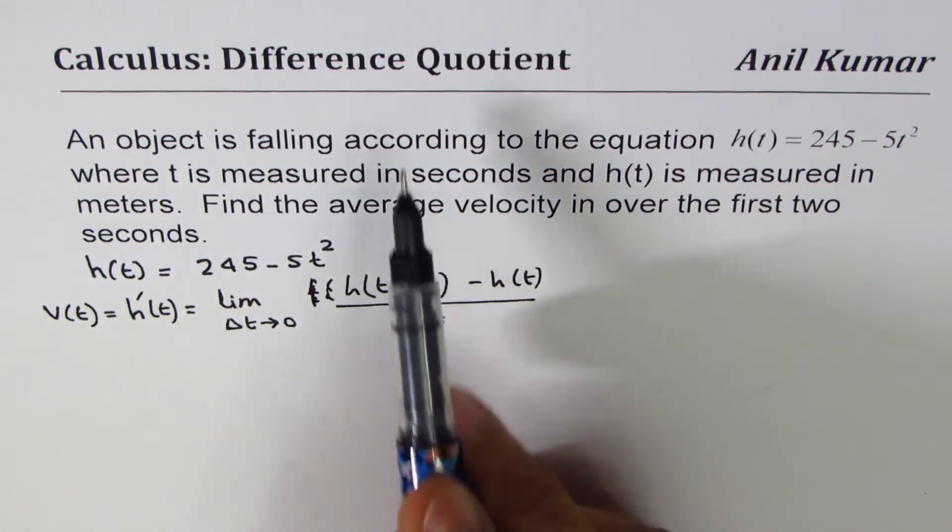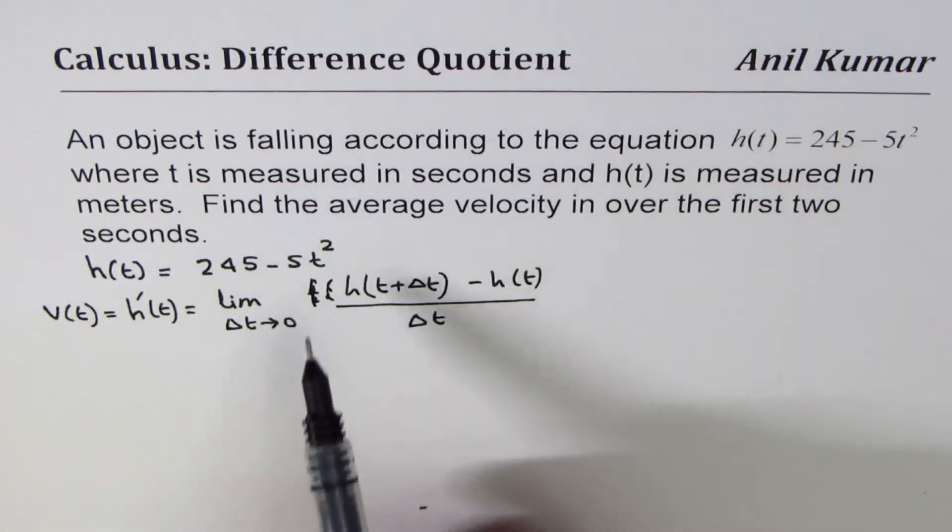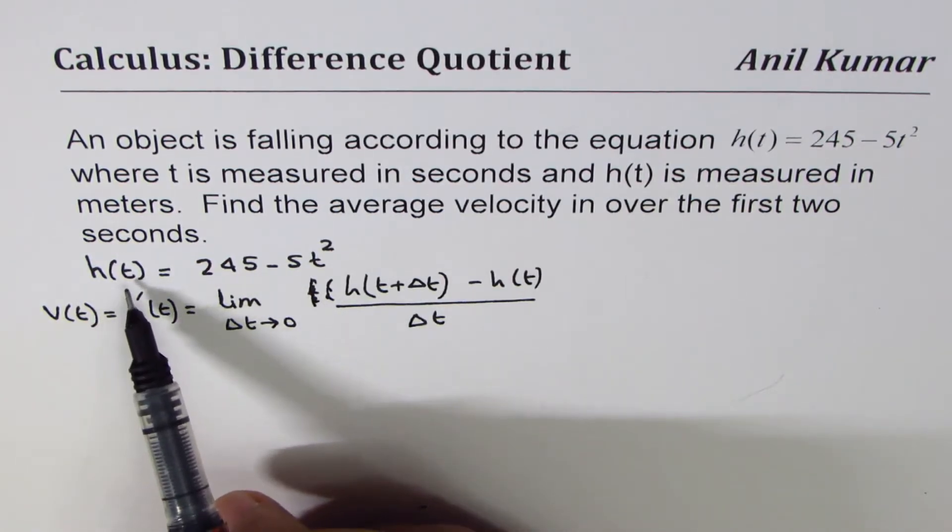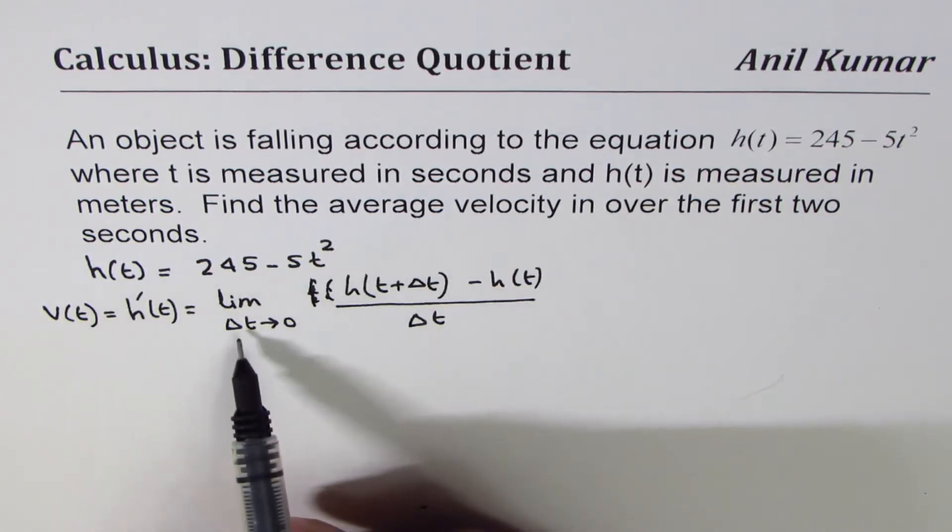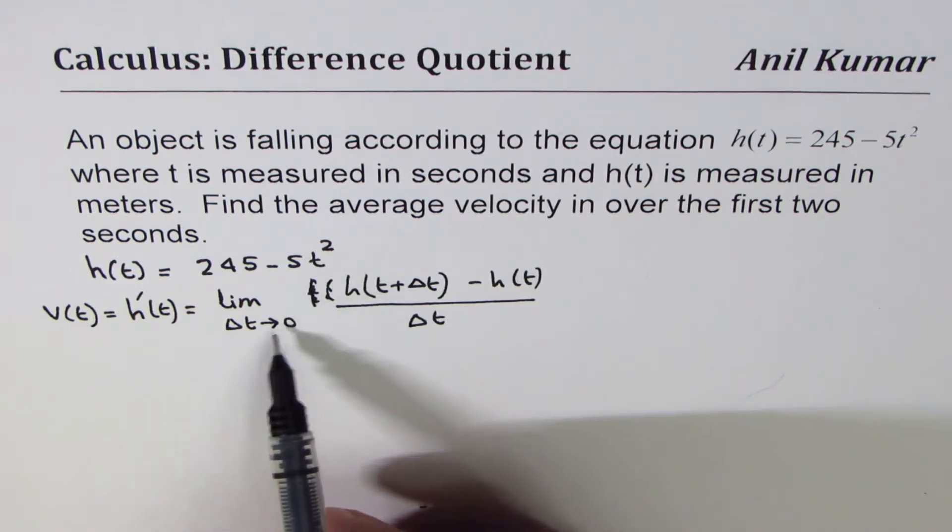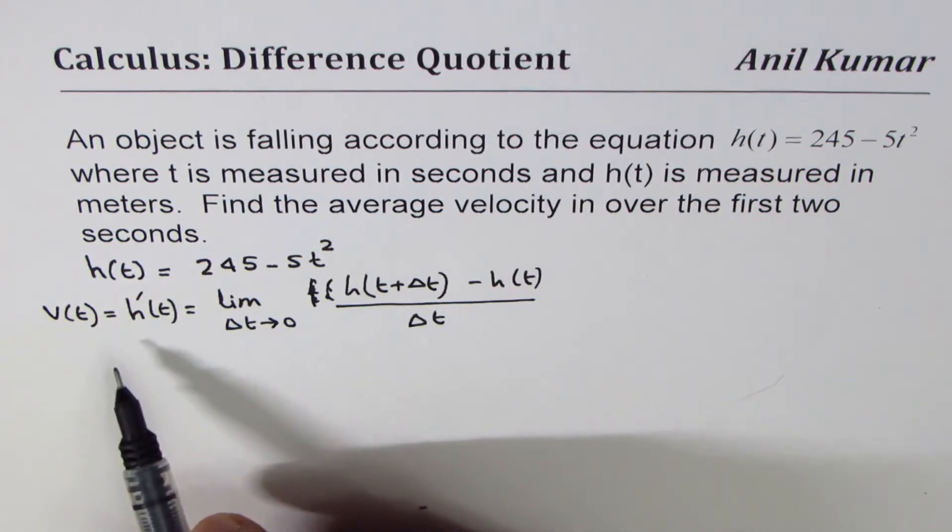So I'm trying to write the same difference quotient equation using the given variables. h(t) is our function. t is the independent variable. Delta t is the point which is very close to any other point, and the distance between those two points is almost 0. So that helps to find the expression for velocity.